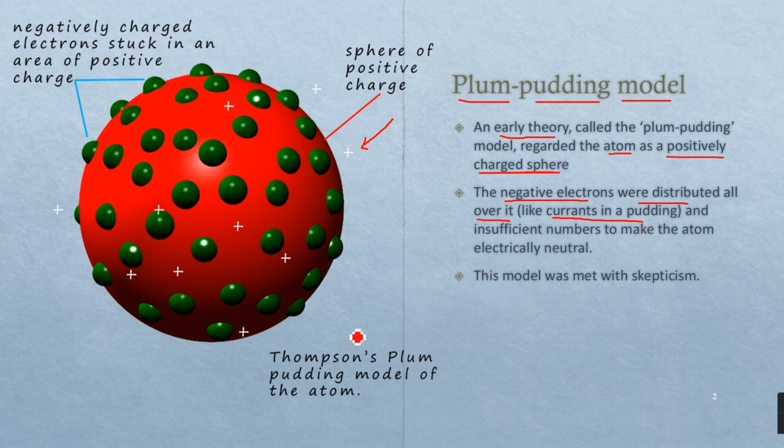This model was not very accurate and was met with a lot of skepticism, but it was developed in the early theory of atomic physics by Thomson, which was called the Thomson Plum-Pudding model of the atom.